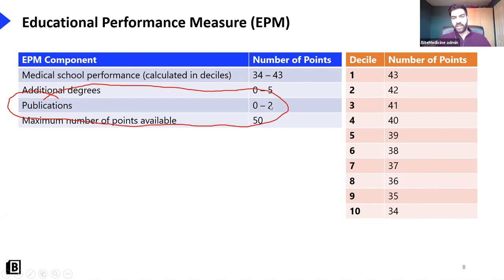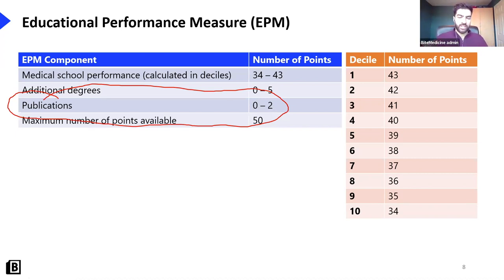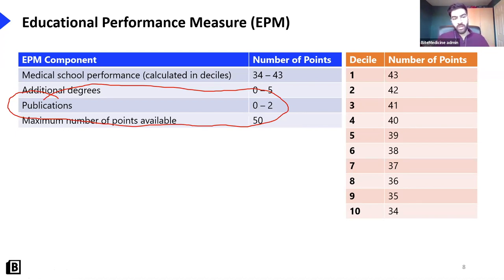If possible, taking a year out to do an additional degree will get you more points than a publication will. If you can get a publication that's an added bonus — there are many people I know who have no publications but got into very prestigious deaneries that they wanted. So don't kill yourself getting a publication, but if you can it is a nice bonus.